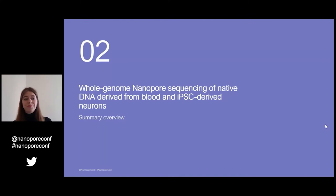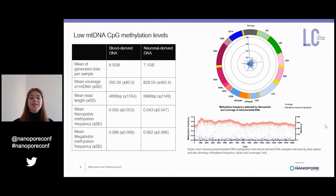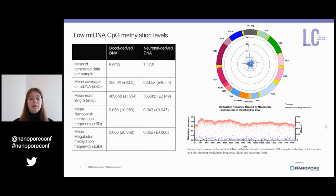We aimed to obtain approximately 10 GB of base-called data per sample. With this, we achieved on average 250x coverage of mtDNA in the blood-derived samples, and interestingly 830x coverage of the mtDNA in the neuron-derived samples. Overall, we detected low-level methylation in both the blood-derived and neuronal-derived samples, and it was within the same range for both Nanopolish and Megalodon. This low level of mtDNA CpG methylation was expected and in concordance with the literature.